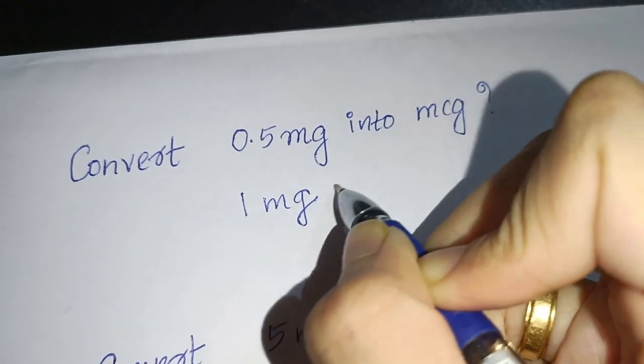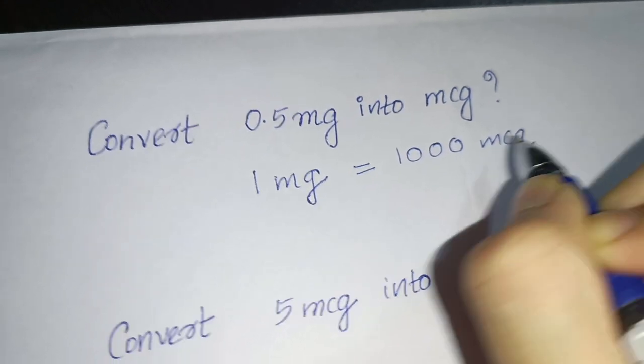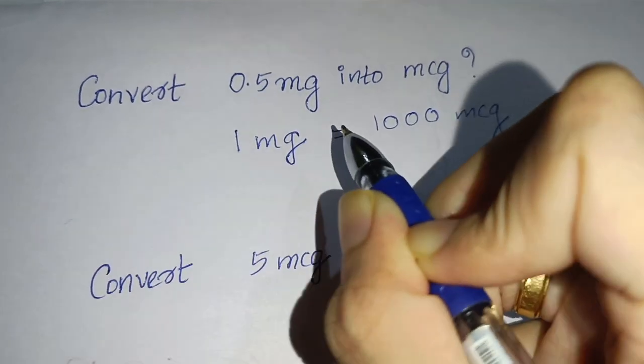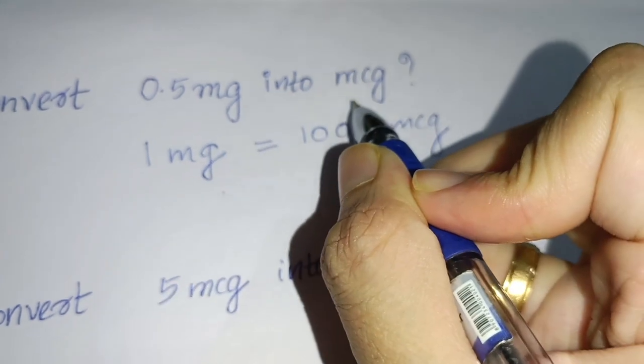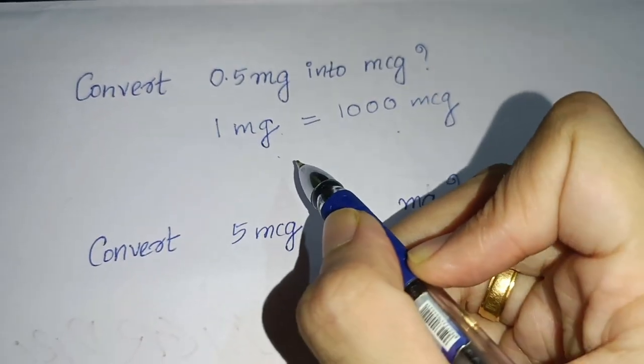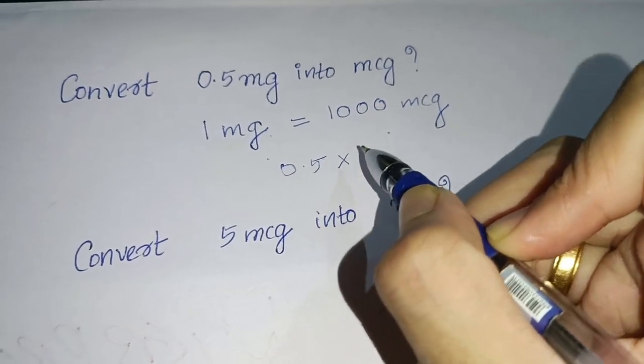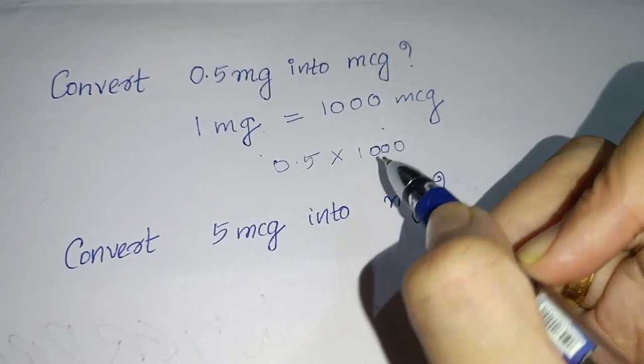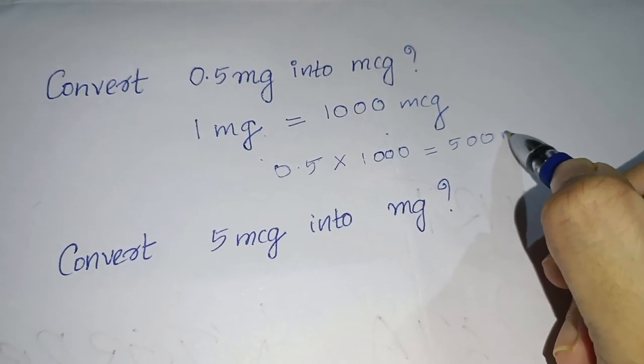You can see here, so to avoid confusion, you always write 1 mg equals 1000 microgram as the very basic equation. So they are asking mg to microgram, right? So what you have to do - this is from the left side to right side, direct question. So 0.5 into 1000 you can do. So 0.5 into 1000 you will get as 500 microgram.